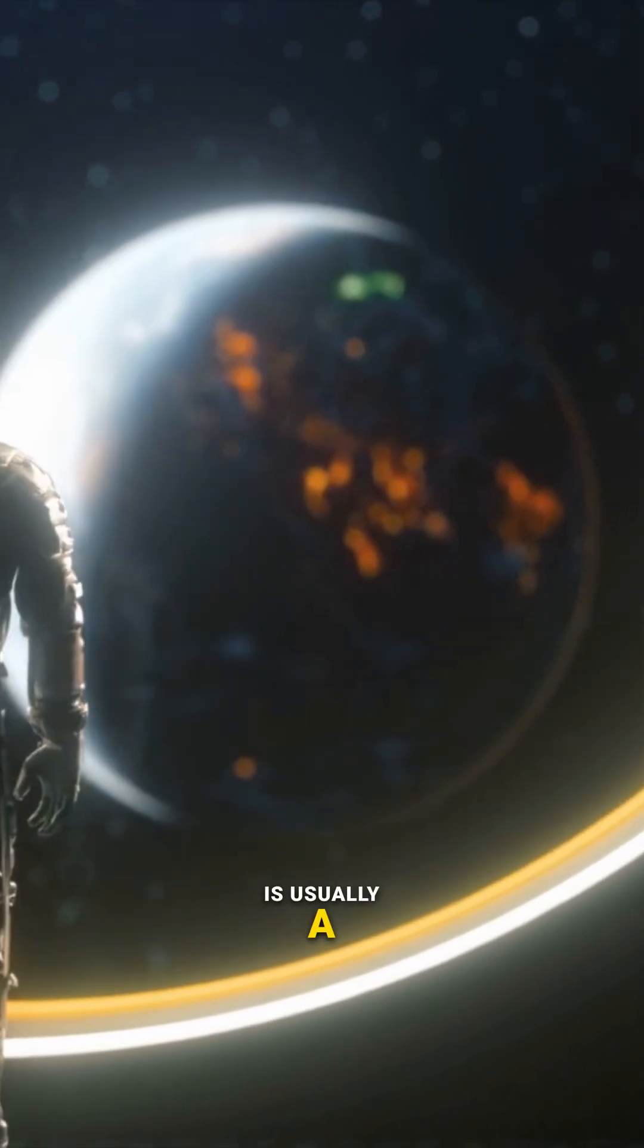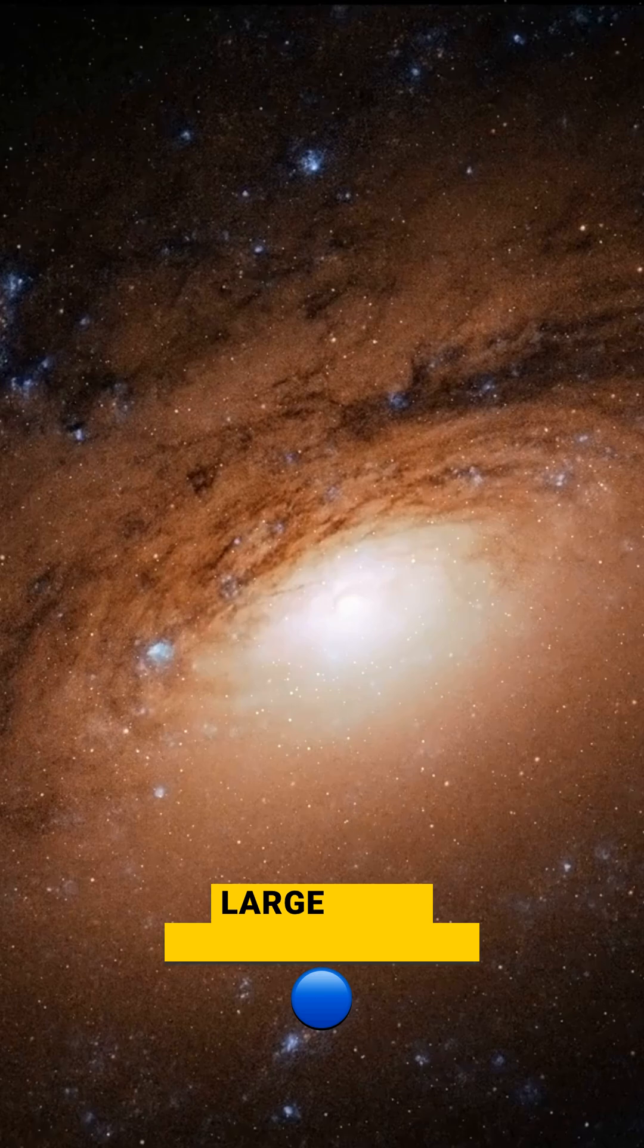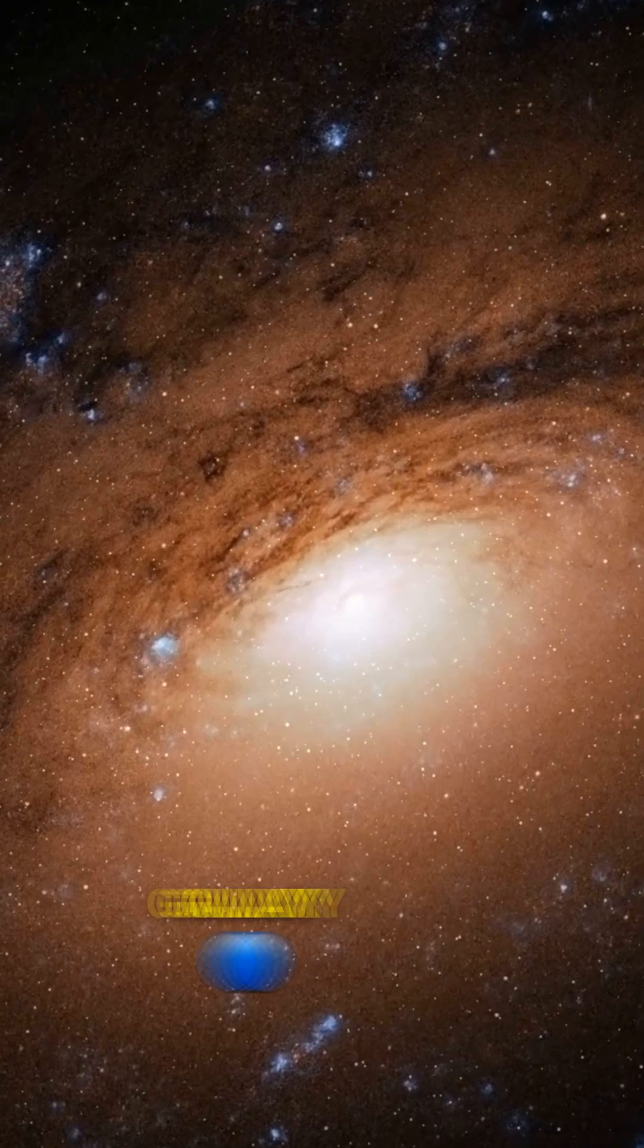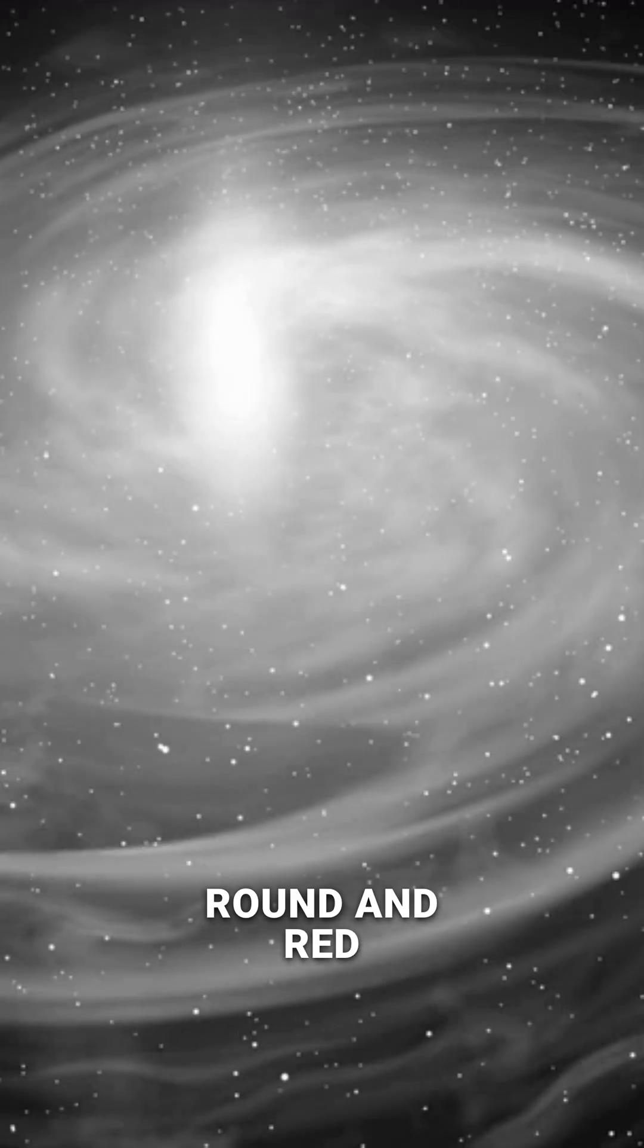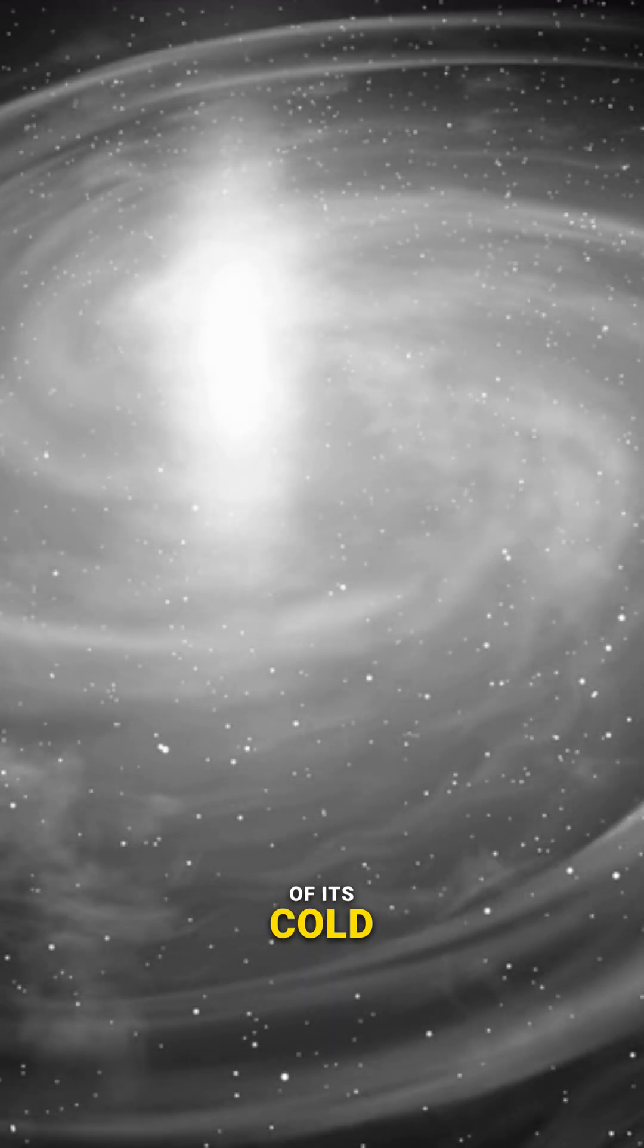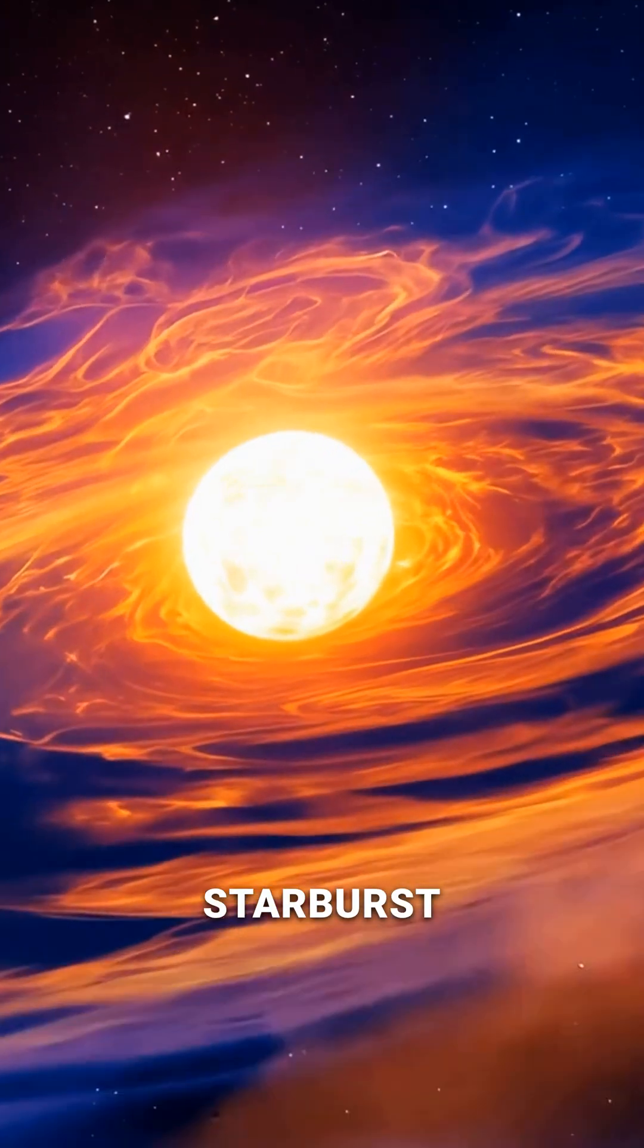The end result is usually a new, single, larger, and often elliptical galaxy, round and red, having used up most of its cold gas in the dramatic starburst.